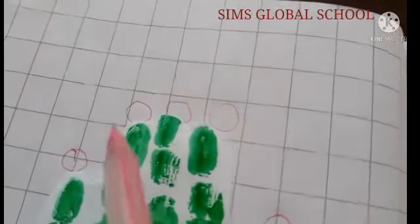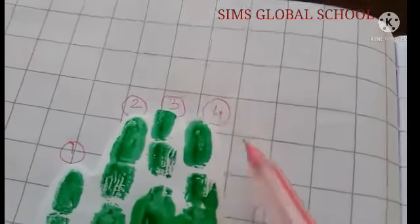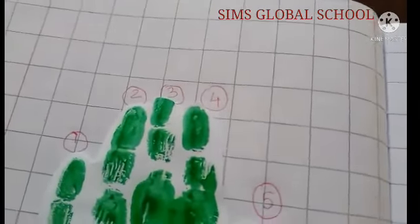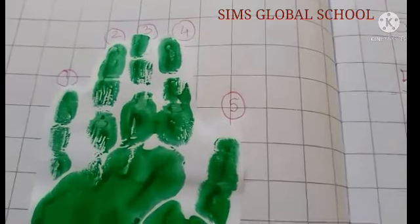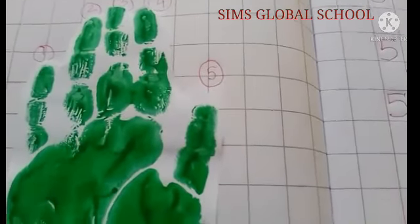So the child has to write one, two, three, four, and five and tell the child that our hand has five fingers. So one, two, three, four, five and that's how we will complete.